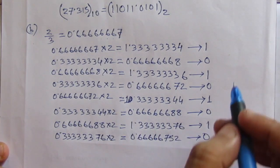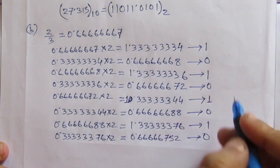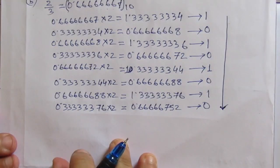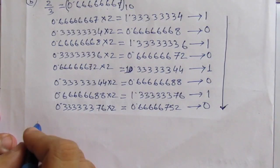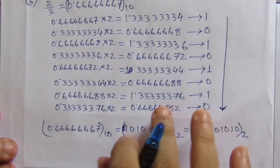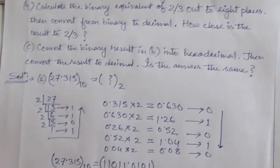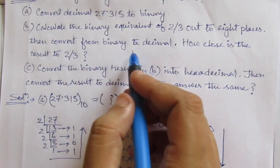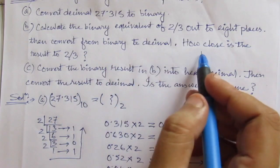We have completed up to eight places, so this is sufficient. This is the binary equivalent of 2/3 to eight places. The next part of the question asks us to convert back from binary to decimal.